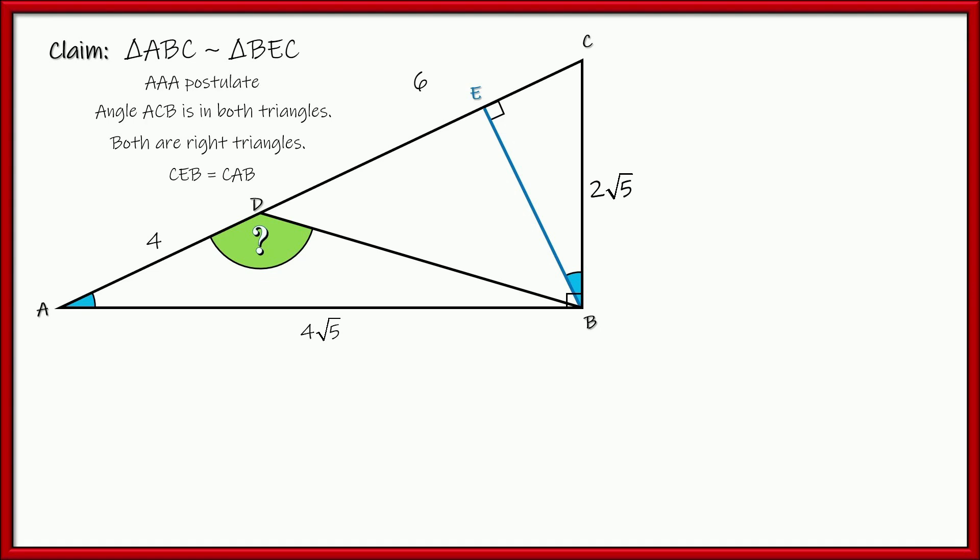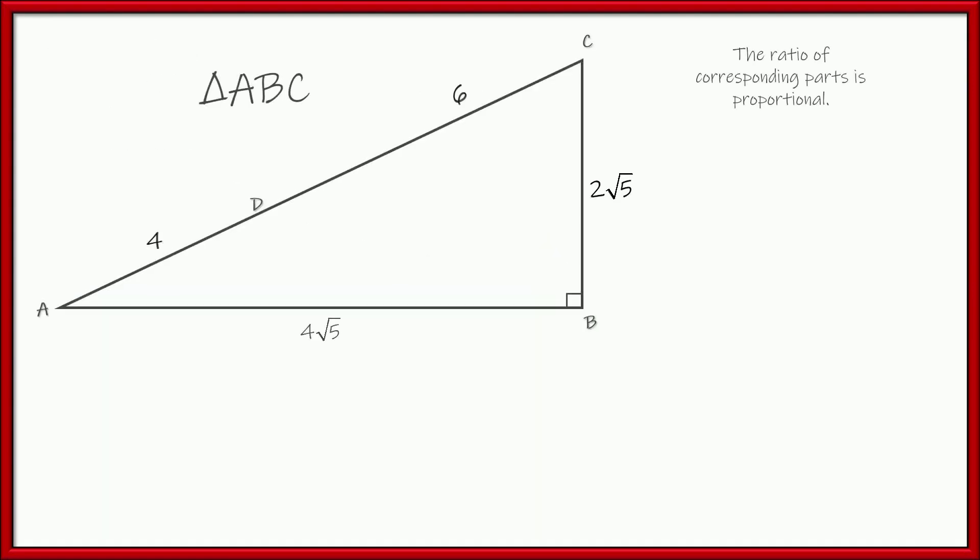So now, corresponding parts of similar triangles are proportional. So let's go ahead and write a ratio of parts here from our big triangle ABC. Let's compare short leg to hypotenuse. So the short leg is 2 root 5, and the hypotenuse is 6 and 4, which makes 10. So we can simplify that by reducing by 2. So comparing the ratio of the short leg to the hypotenuse, we get root 5 over 5.